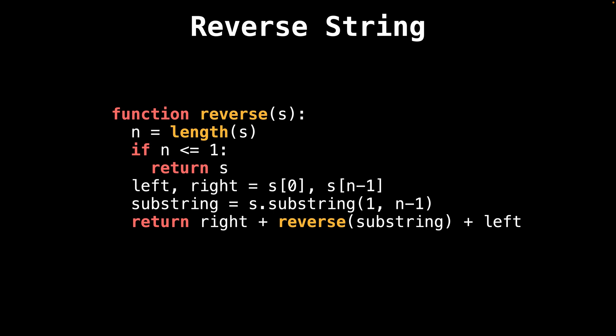This is the pseudocode for the outside in method. Let's take a short walk through it. In the base case, we verify if the string's length is less than or equal to one, in which case we would return the current string.